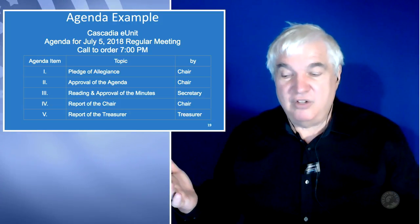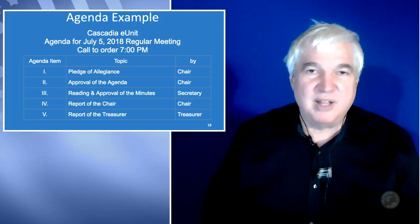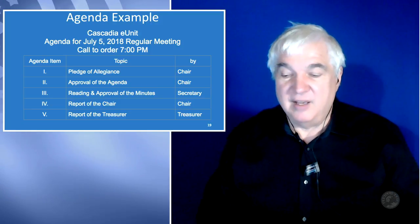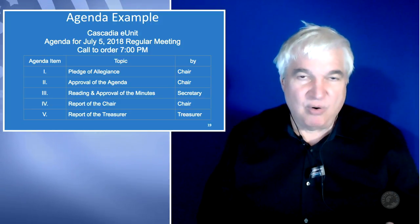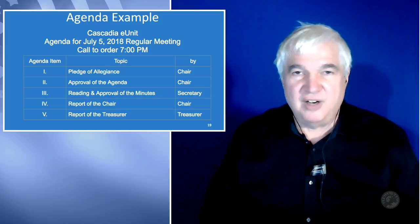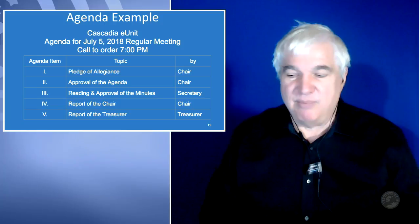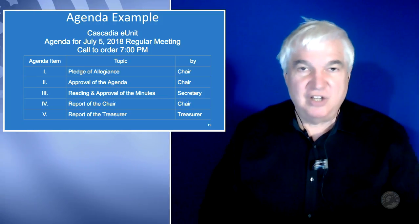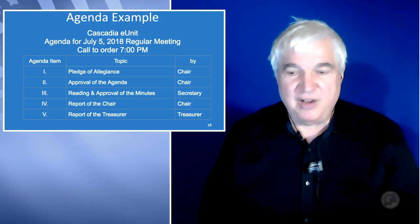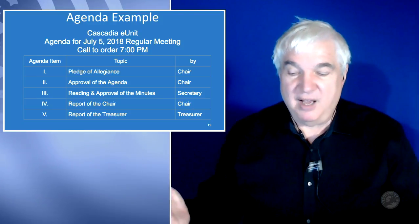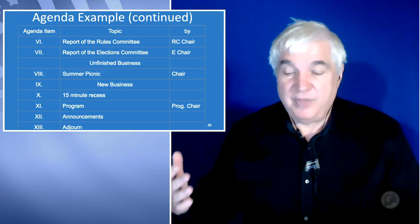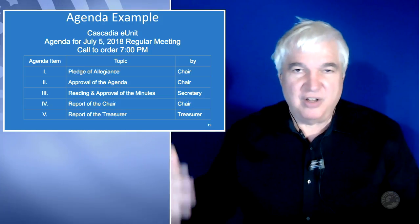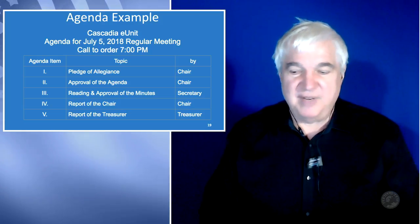You might have what they call ceremonies — a ceremony we often do is say the Pledge of Allegiance. The next item was not listed in the order of business, but it's good to put on there as a reminder that the approval of the agenda is a step you need to do. I always like to state that we're going to approve the agenda, so you don't make assumptions that everyone is happy with how you're going to spend your time. The next item is the reading and approval of the minutes. Then usually you start with the reports of the officers, starting with the chair, working down to the vice chair, then to the treasurer, and then the secretary or any other officers.